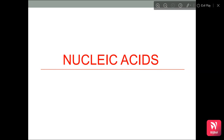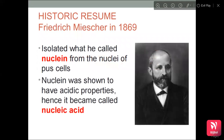Today's topic of discussion is Nucleic Acids. Let us first discuss the historic background of Nucleic Acids. In 1869, Frederick Miescher was the first person who isolated the Nucleic Acid and he called it Nuclein. He isolated it from the nuclei of muscles. Nuclei were shown to have acidic properties, hence it was called Nucleic Acid.